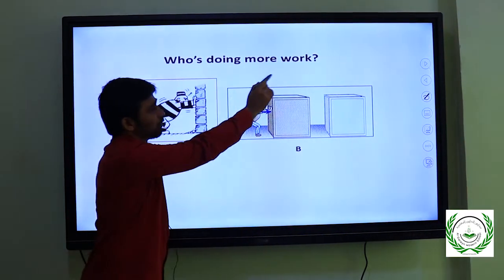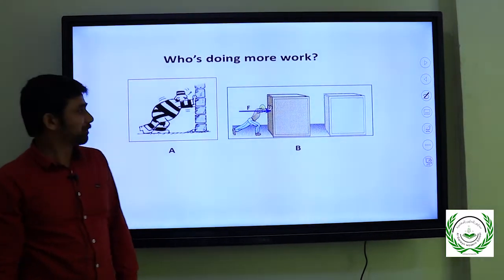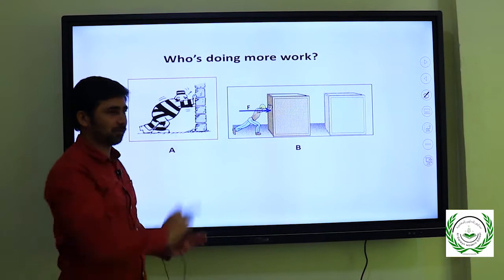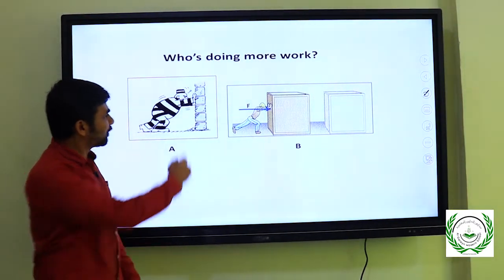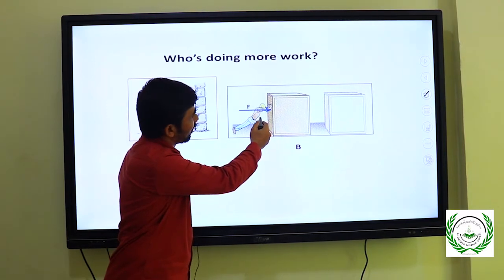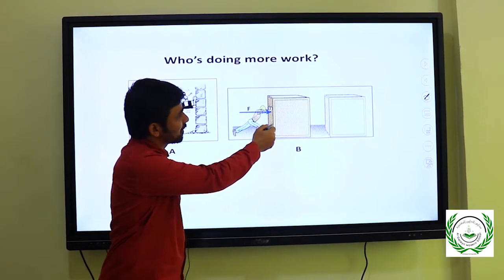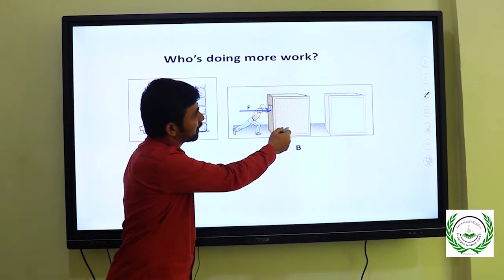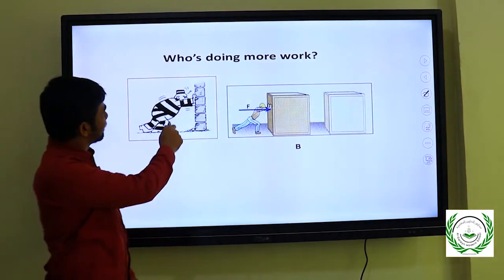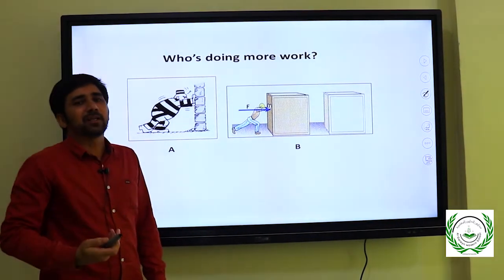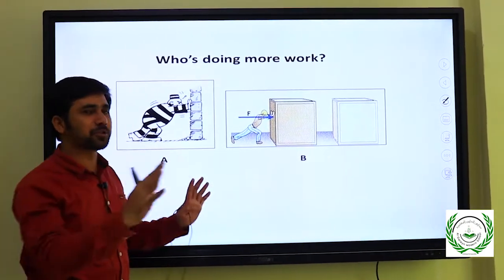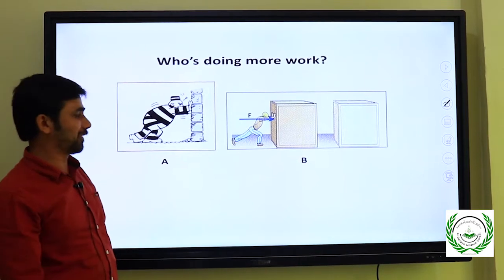Who is doing more work here according to the picture? In the picture, a man is pushing a wall and the wall is not moving. And here, a person is pushing an object and it has moved a distance. According to common terms, this man is doing a lot of work by pushing.